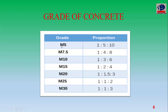In M5, M represents the mix name. The values are 5, 7.5, 10, 15, 20, 25 — these represent the characteristic compressive strength at 28 days of curing. We use the corresponding proportions: for M5, the proportion is 1:5:10 — where 1 is cement, 5 is fine aggregate, 10 is coarse aggregate. The metal is proportional.